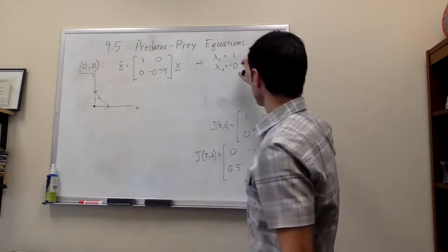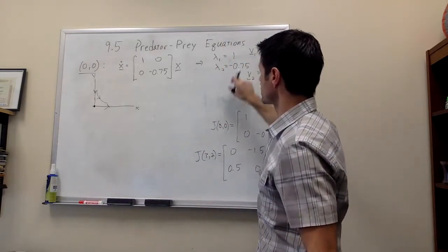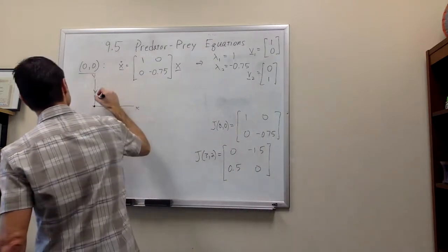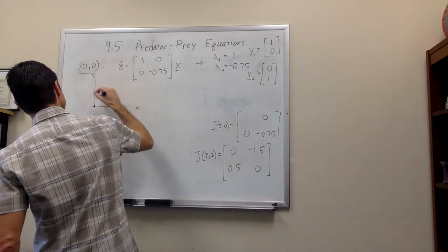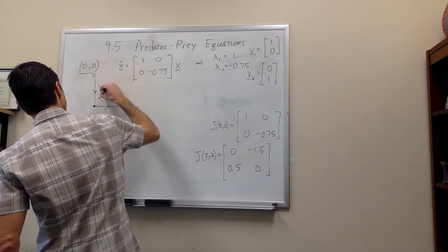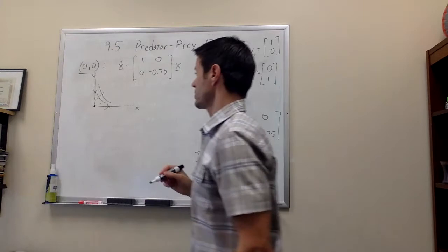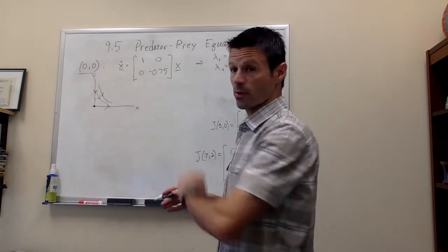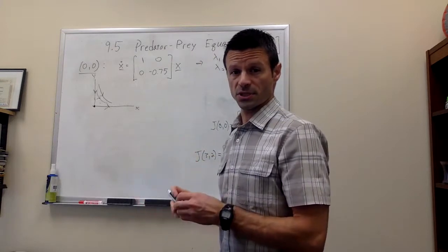So we have a saddle point here from the fact that the eigenvalues are different signs. That's what the phase portrait would look like near the point. And you could fill in the details for the other three quadrants, but those aren't physically relevant.